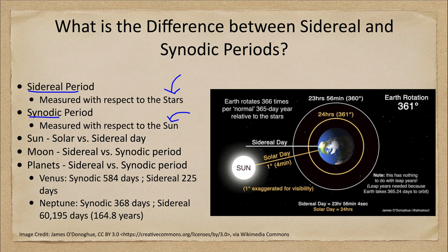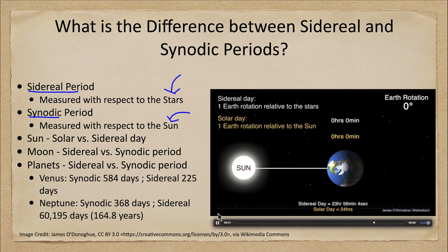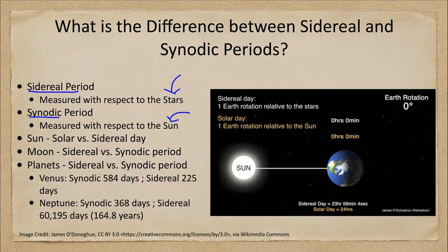That takes about four minutes more. Now it's been greatly exaggerated here for you to be able to see that. But that's the difference between the solar and the sidereal day, which is about four minutes long. The solar day is what we use — that is our standard timekeeping. The sidereal day is what we're actually rotating relative to the stars.